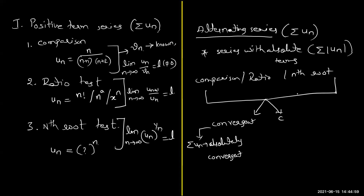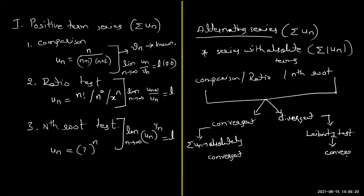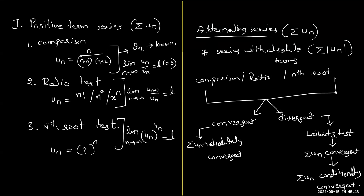In case summation |u_n| is divergent, we then use the Leibniz test. By the Leibniz test, if we get the given series summation u_n as convergent, we say that summation u_n is conditionally convergent. This is the basic idea in the case of alternating series — this is how we give a conclusion about whether the series is convergent or divergent.